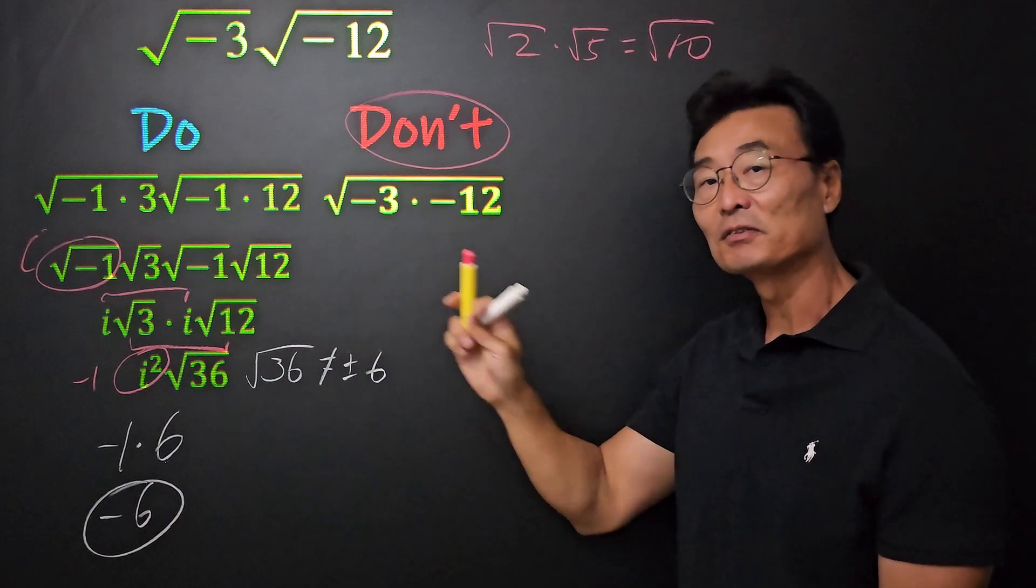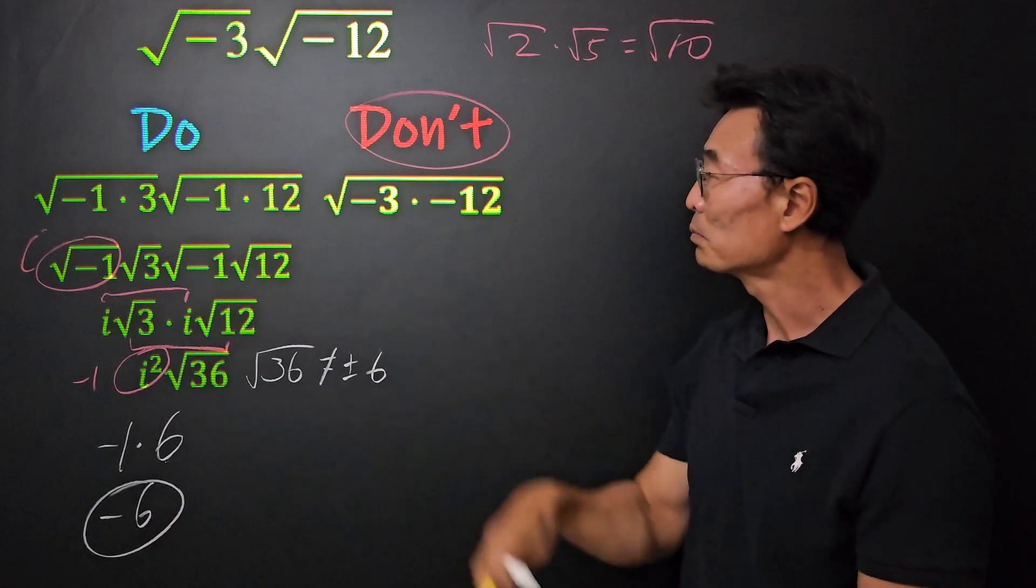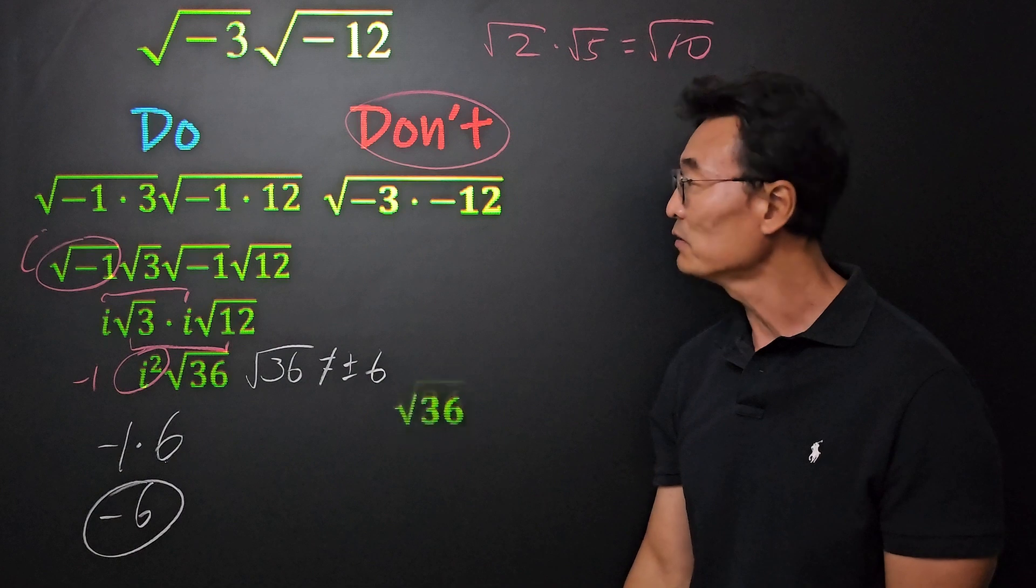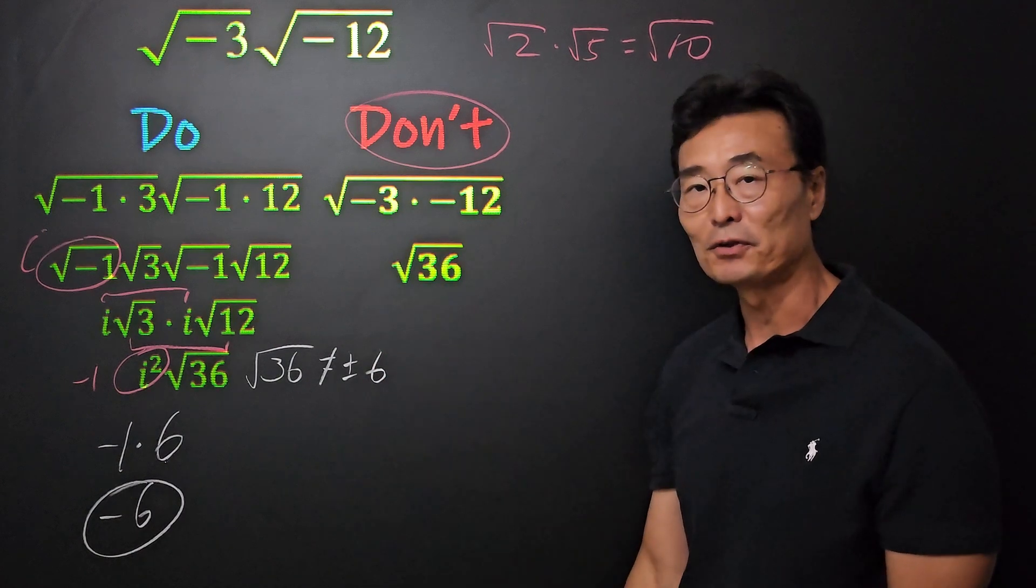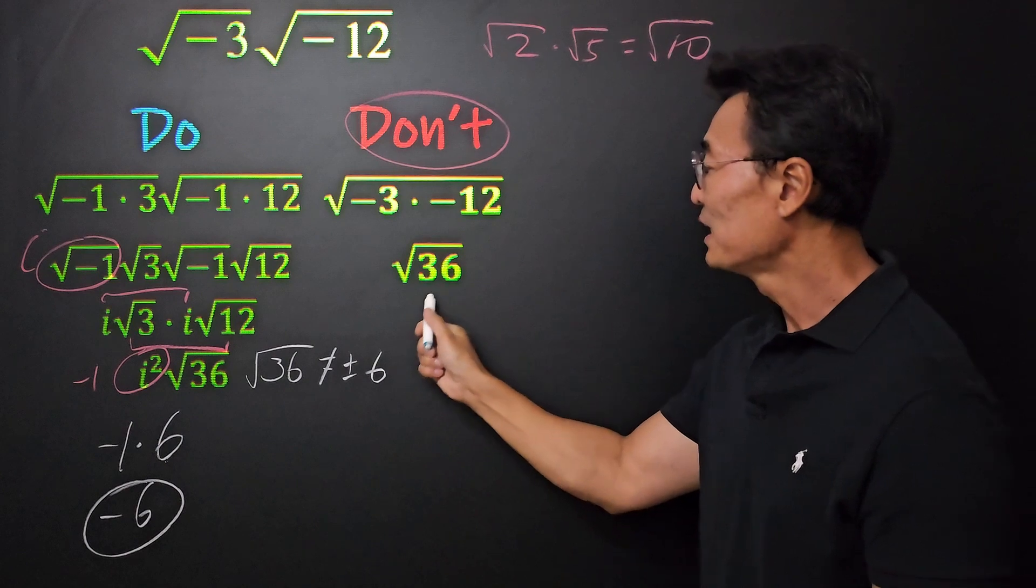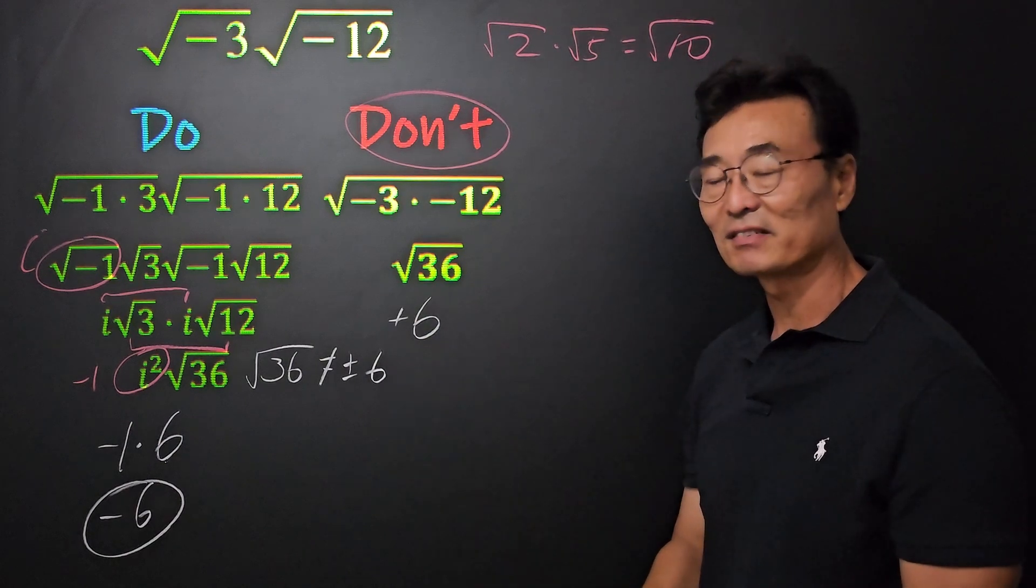Again, don't do this. The reason for that is because if we multiply negative 3 and negative 12, we end up getting positive 36 or square root of 36, which gives us a final answer of plus 6.